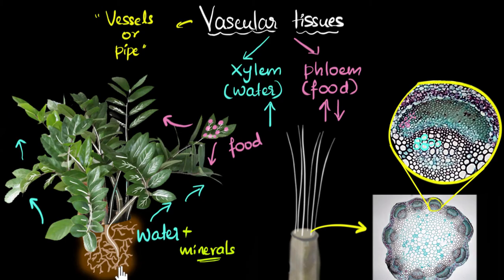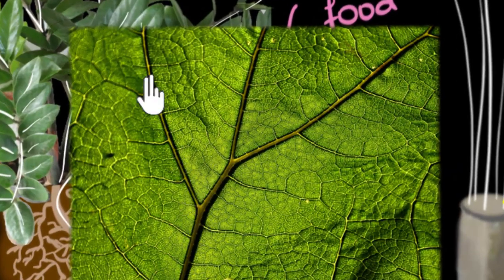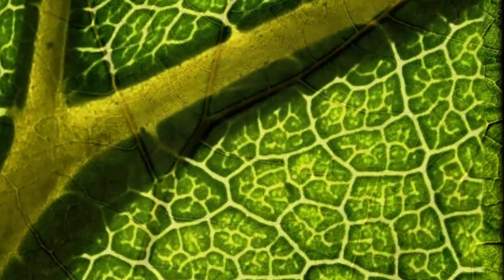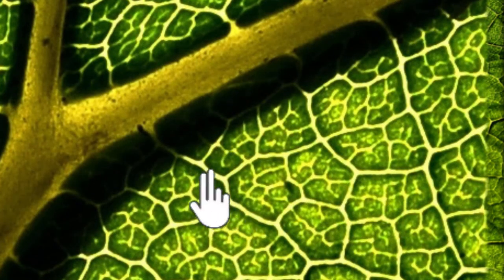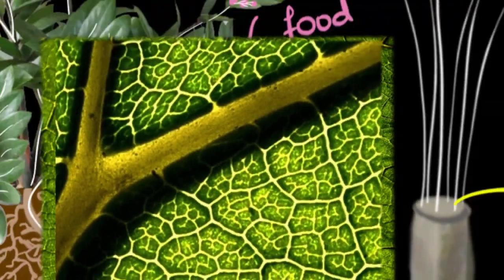These pipes run from the roots all the way into the leaves. The veins you see in a leaf are actually the xylem and phloem — the vascular tissues. They branch off into smaller and smaller networks, like roads connecting different parts of a city, ensuring that the maximum number of cells can receive food and water. That's how the transport system in plants works — isn't that amazing?